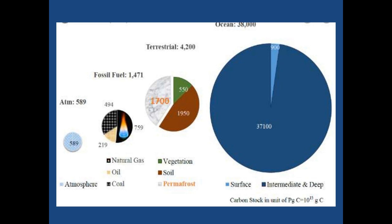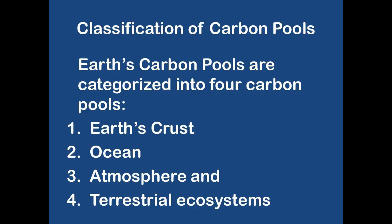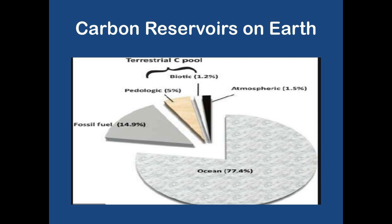Basically, the Earth's carbon pools can be grouped into four very broad categories that have great relevance to the overall carbon cycle. These carbon pools are: Earth's crust, ocean, atmosphere, and terrestrial ecosystems. So now let's discuss each one of these carbon pools.